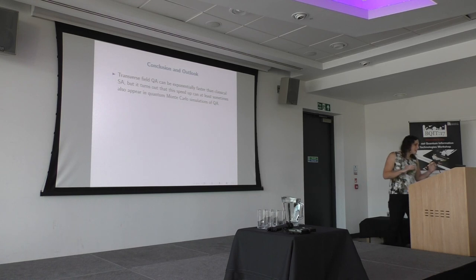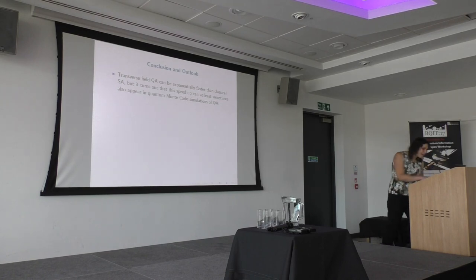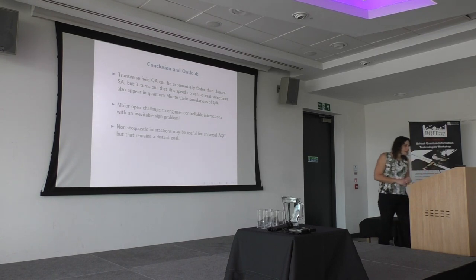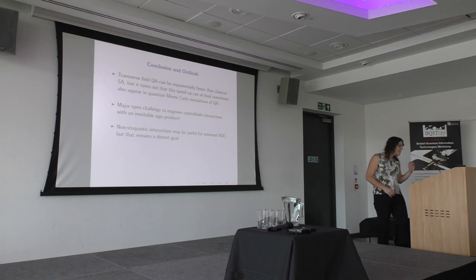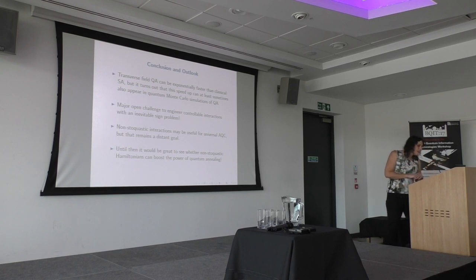To summarize: transverse field quantum annealing can be exponentially faster than simulated annealing, which is great. But the speedup can at least sometimes be captured by classical simulations of quantum annealing. There are major open challenges to engineering controllable interactions with this inescapable sign problem — people have been working hard on this for the last few years. Non-stoquastic interactions might find theoretical justification one day for universal adiabatic computing, but that's a distant goal. A more near-term goal would be to change the transverse field in quantum annealing to have a sign problem and see if that provides more quantum speedup — ideally implemented in superconducting hardware.